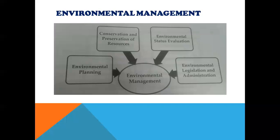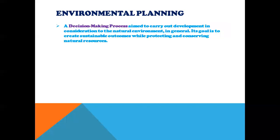Environmental management includes the following components: environmental planning, conservation and preservation of resources, environmental status evaluation, and environmental legislation and administration. Environmental planning is a decision-making process aimed to carry out development in consideration of the natural environment. Its goal is to create sustainable outcomes while protecting and conserving natural resources.